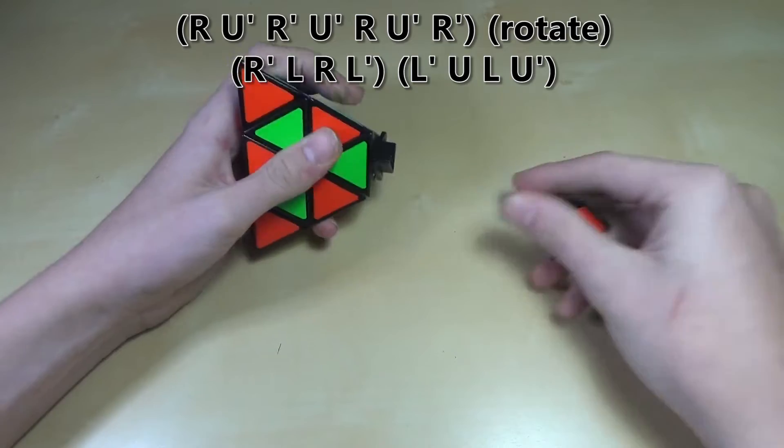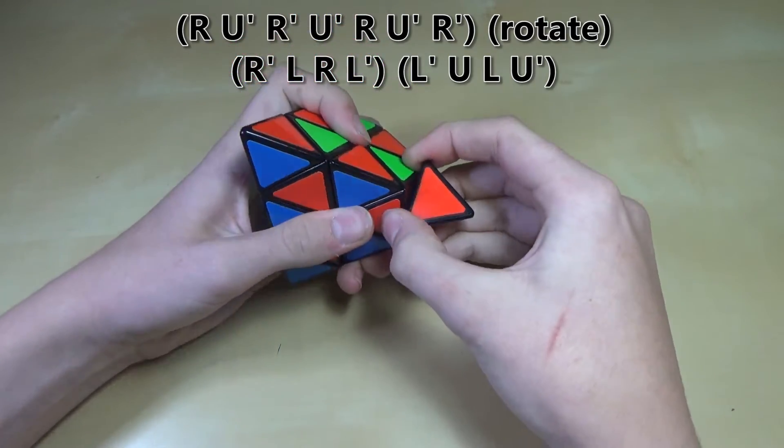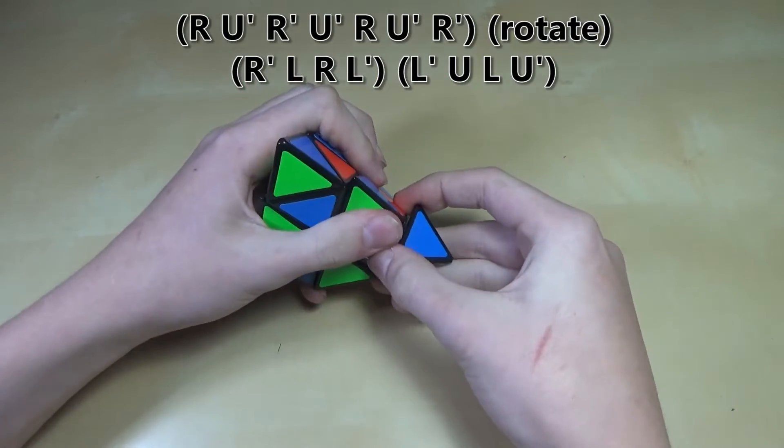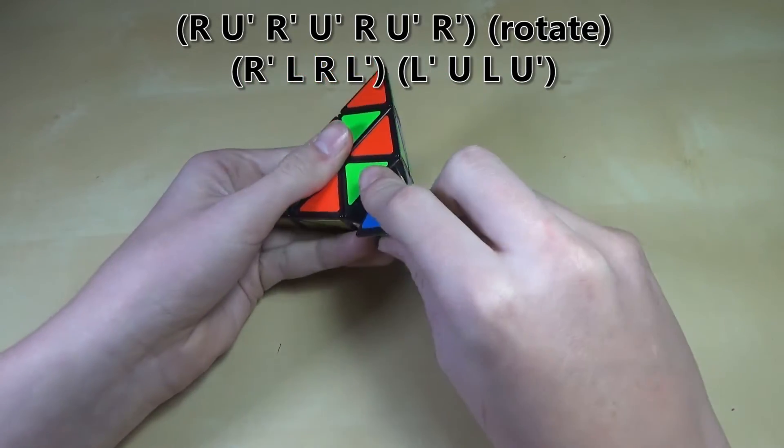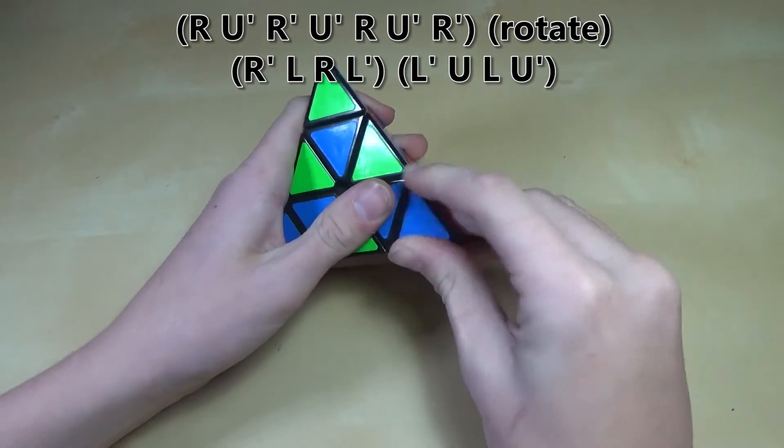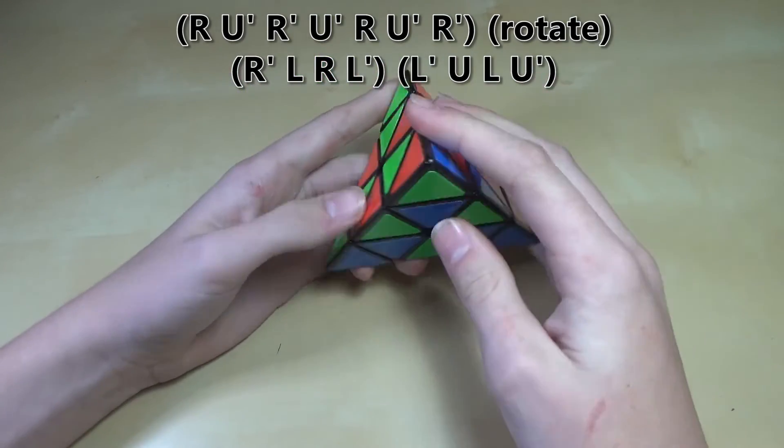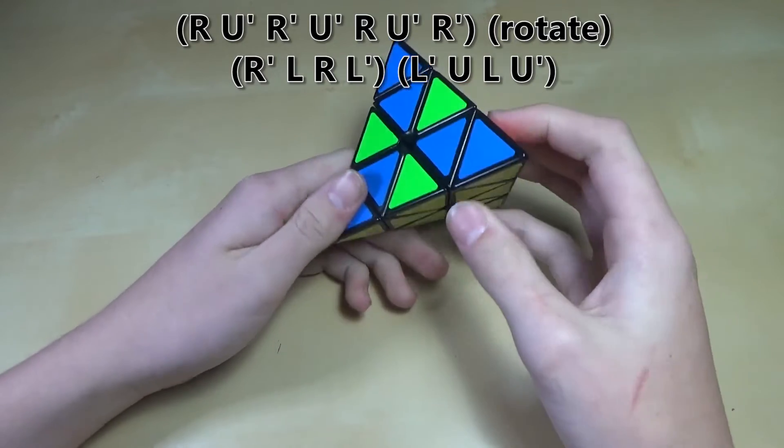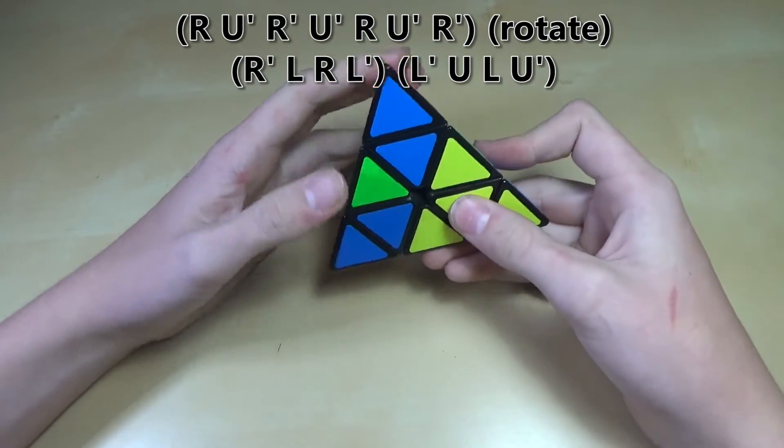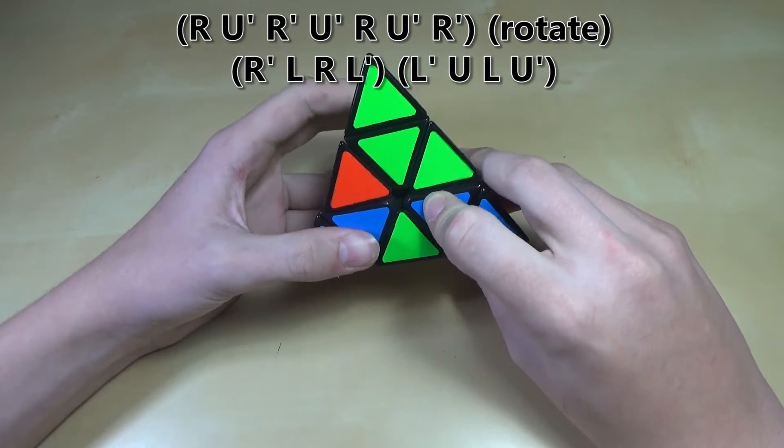Then of course to undo this pattern all you have to do is first pick off the tips, because you're going to want to put them back first just to avoid any confusion that they might cause. And then you can either just do each of those algorithms two more times or just do an alternate algorithm once. I'm just going to show you that alternate algorithm real quick. What you're going to do is R U', R', U',